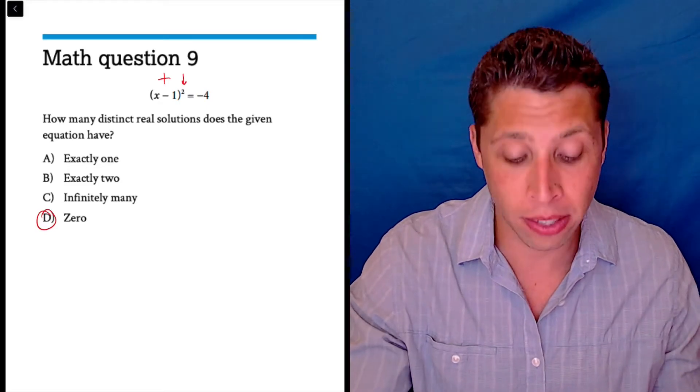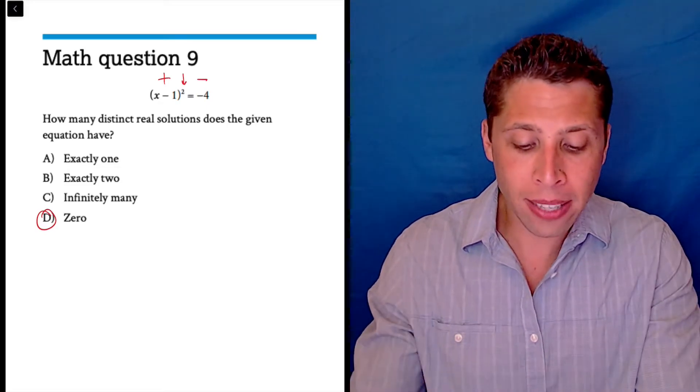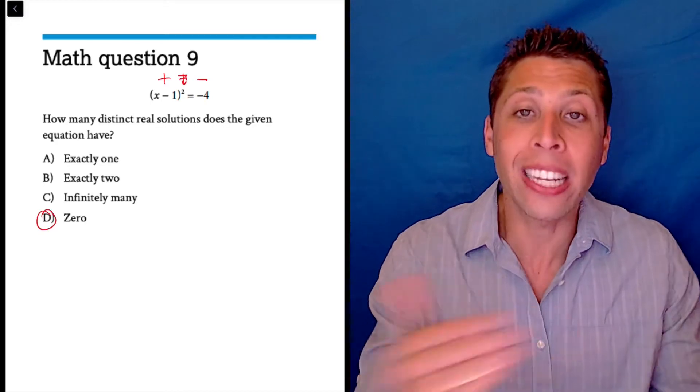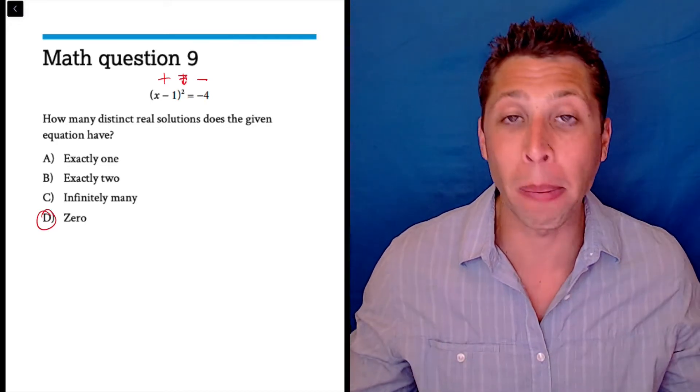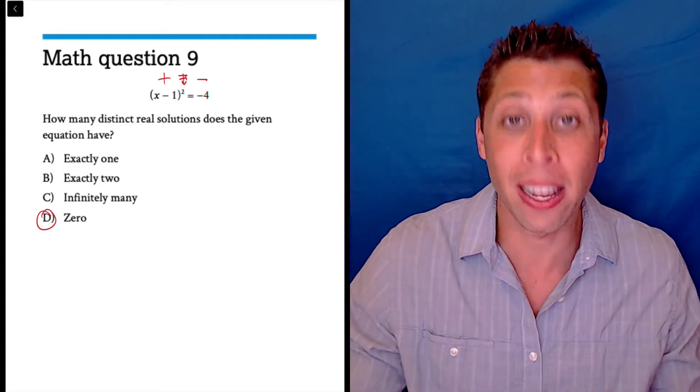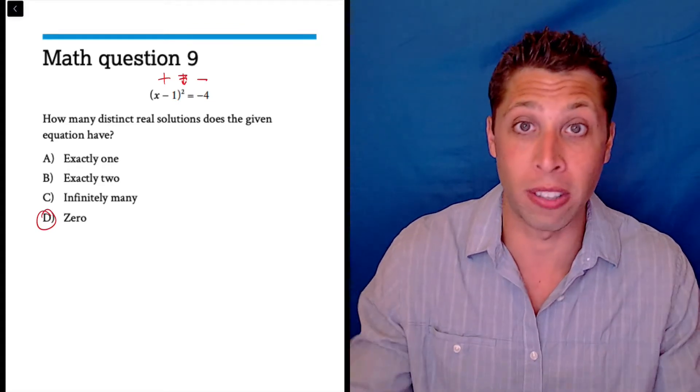Negative times a negative is a positive. So it's impossible for that positive to equal the negative four that we have on the right side. It will not happen. It is a fundamental problem of exponents that makes this impossible and so there are zero solutions. It's impossible.